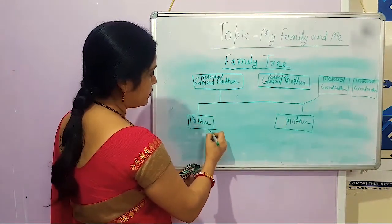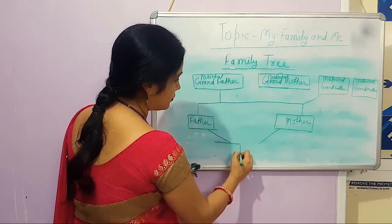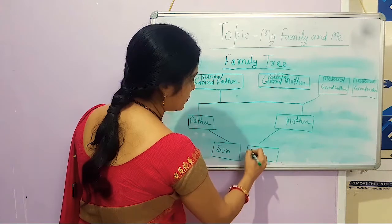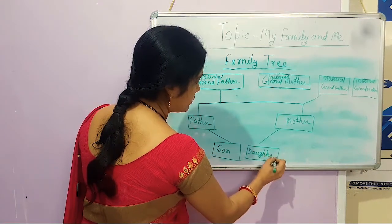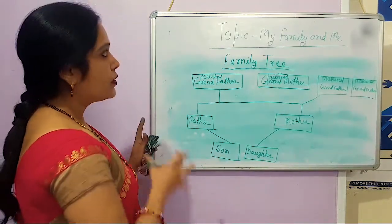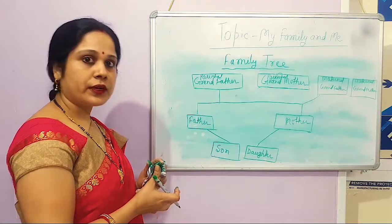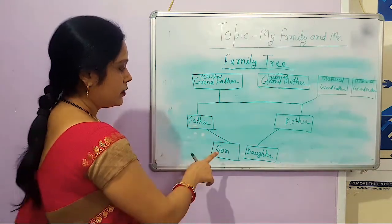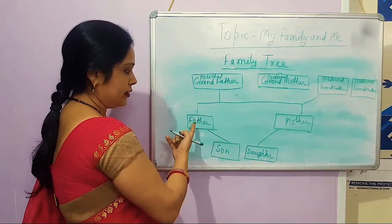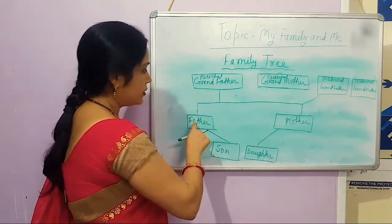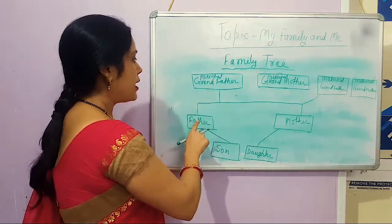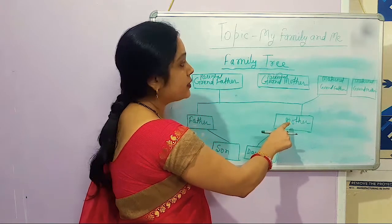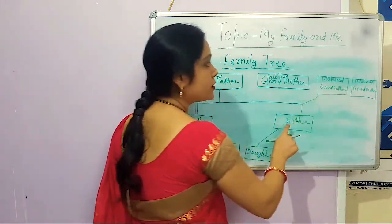This one shows son and daughter. His son, his daughter, and his father, his mother. The father of father is called paternal grandfather. The mother of father is called paternal grandmother. The father of mother is called maternal grandfather. And the mother of mother is called maternal grandmother.